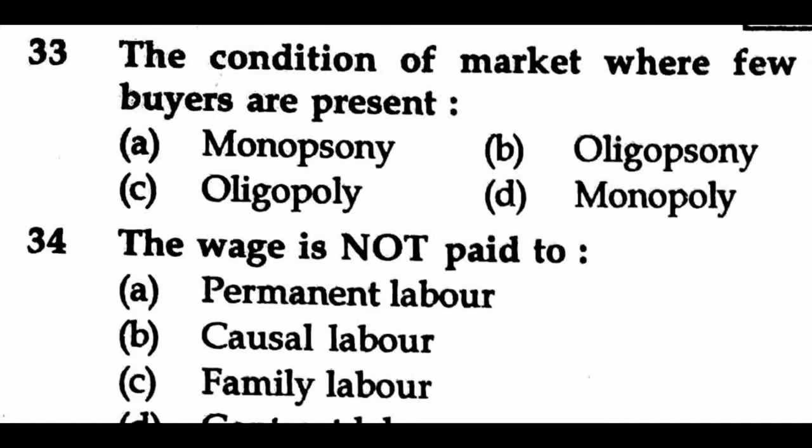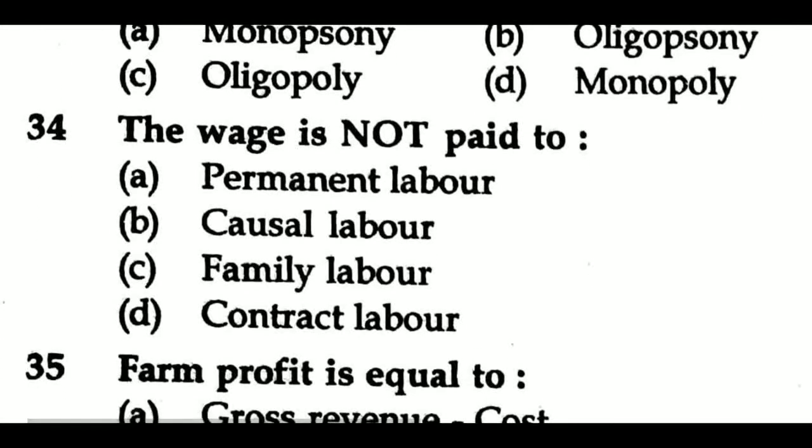Question 33: The condition of market where few buyers are present is called — Option A: monopsony, Option B: oligopsony, Option C: oligopoly, Option D: monopoly. Question 34 options: Option A: permanent labor, Option B: casual labor, Option C: family labor, Option D: contract labor.